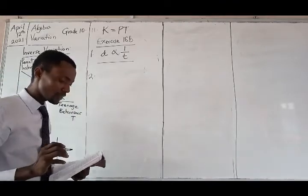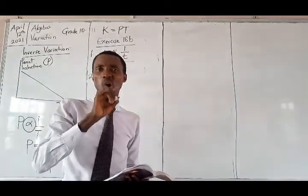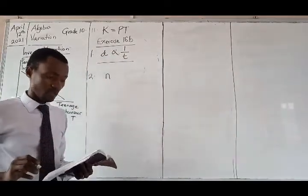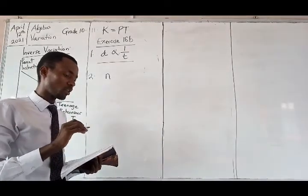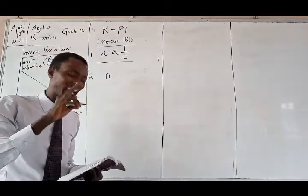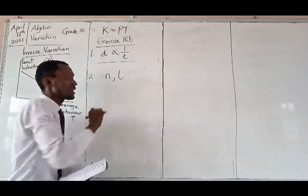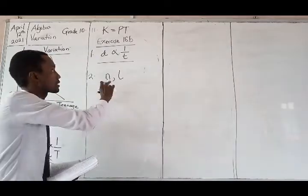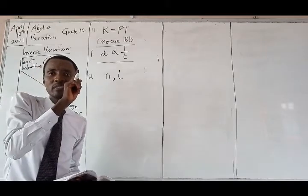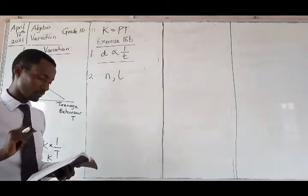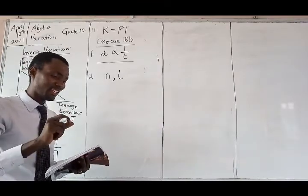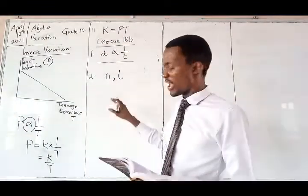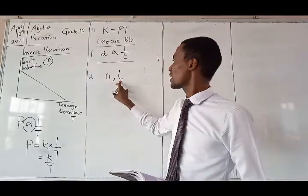Now let's look at question number 2. A piece of string is cut into N pieces of equal length L. These are the terms we are looking at. Such that each piece has a length of L. Does N vary directly or inversely with L? That's the question.